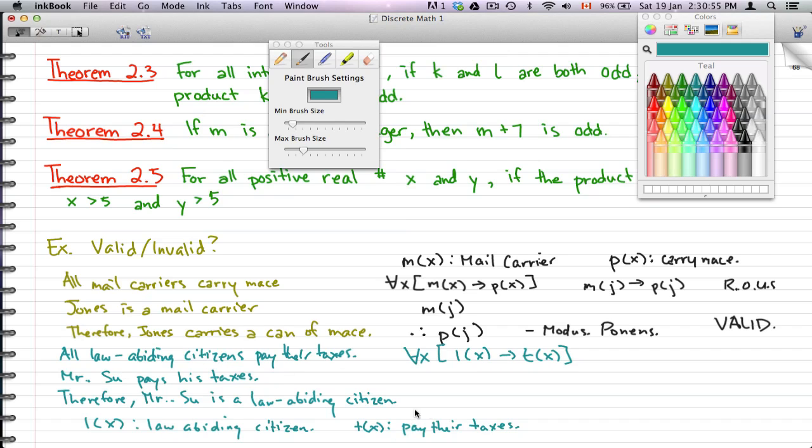Law-abiding citizen implies they pay their taxes. Now Mr. Su pays his taxes, so therefore Mr. Liu is a law-abiding citizen. Now this is invalid.